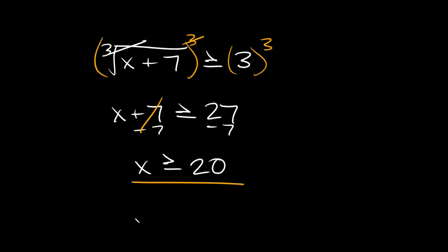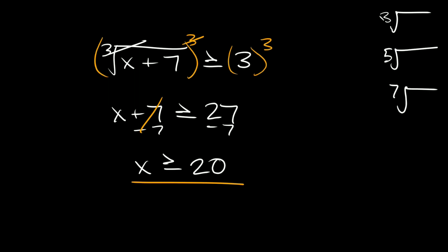That's our final answer, and here we would not have to set the radicand — the thing inside the radical — greater than or equal to zero, because we can have a negative number inside of a cube root. If you have a cube root, a fifth root, or a seventh root — any odd index — you can definitely have a negative number in there and you don't have to do the extra step.